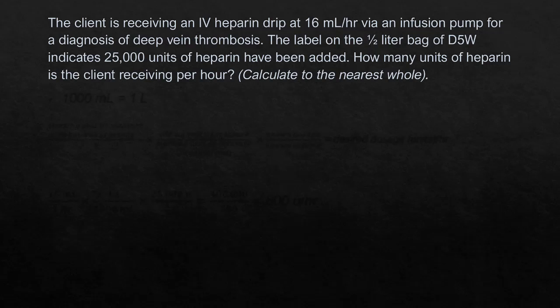The client is receiving an IV heparin drip at 16 milliliters an hour via an infusion pump for a diagnosis of deep vein thrombosis. The label on the half liter bag of D5W indicates 25,000 units of heparin have been added. How many units of heparin is the client receiving per hour? Calculate to the nearest whole. In this question, our answer needs to be in units per hour, so we need to go from milliliters to units per hour. We'll need to know how many milliliters are in a liter — there are 1,000 milliliters in a liter, from our conversion chart.